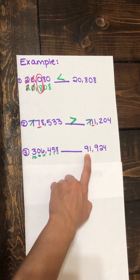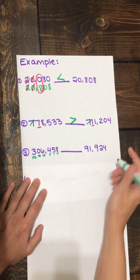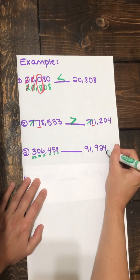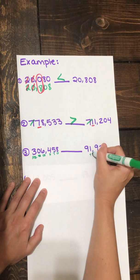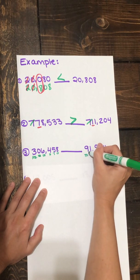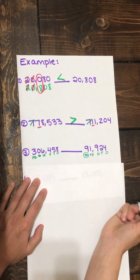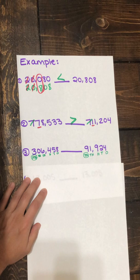What place is our nine in? If we start on the right, we can work toward the left, the ones place, the tens place, the hundreds place, the thousands place, and the tens thousands place. So our nine is in the tens thousands place, and our three is in the hundred thousands place.